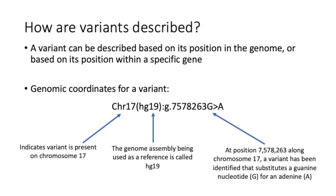A variant can be described based on its position in the genome or based on its position within a specific gene. This example shows how a variant can be described based on its position within the genome. CHR17 indicates that this variant is present on chromosome number 17. The HG19 notation in parentheses refers to the genome assembly being used as a reference. The lowercase g indicates the coordinates provided refer to a position in the genome rather than a position within a specific gene. In this example, at nucleotide position 7,578,263 on chromosome 17 in genome assembly HG19, the reference nucleotide is a G.